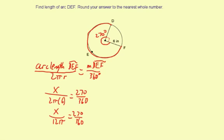And it'll be a lot easier to do this if we reduce the fraction here on the right-hand side. So I know it reduces by 10 right away. And then 27 and 36 both have a common factor of 9, so it'll be 3 to 4. So I can rewrite this as x over 12π equals 3 to 4.